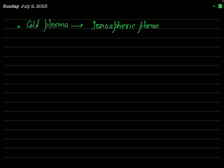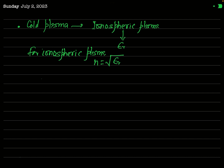This plasma consists of positively charged ions and negatively charged electrons. When you talk about ionospheric plasma, it has such a value of relative permittivity that its square root is less than one. So for ionospheric plasma or cold plasma, the refractive index equals √εᵣ — because plasma is a non-magnetic material — and this is found to be less than one.